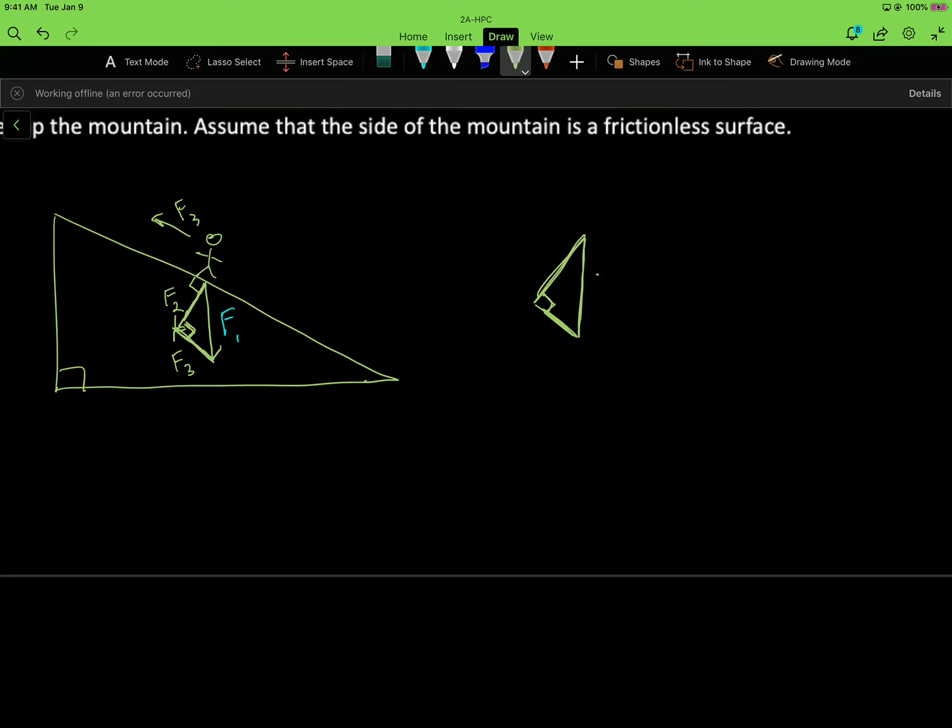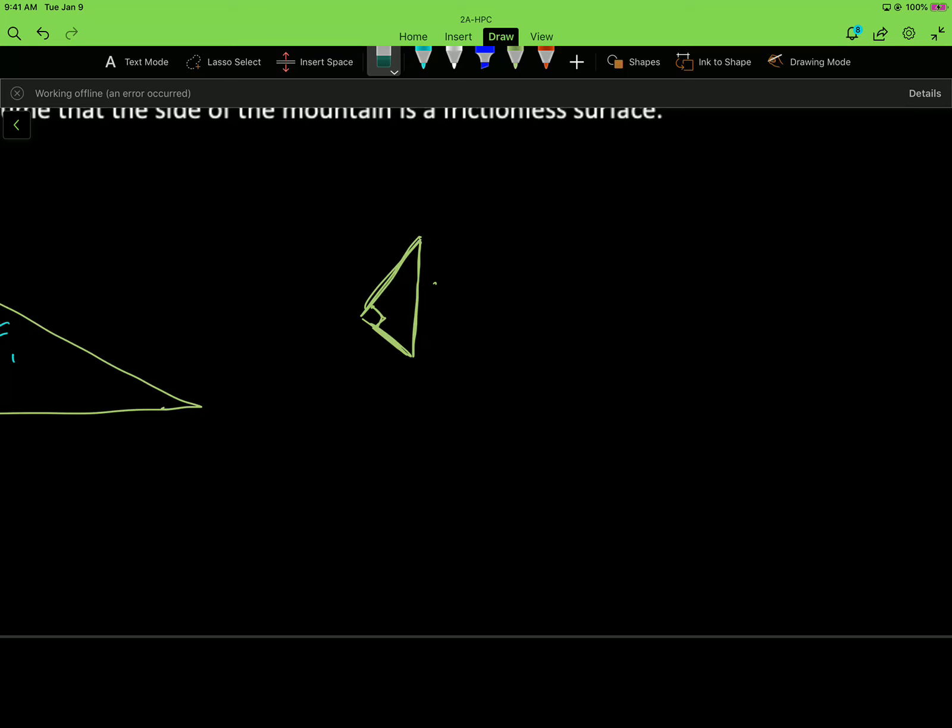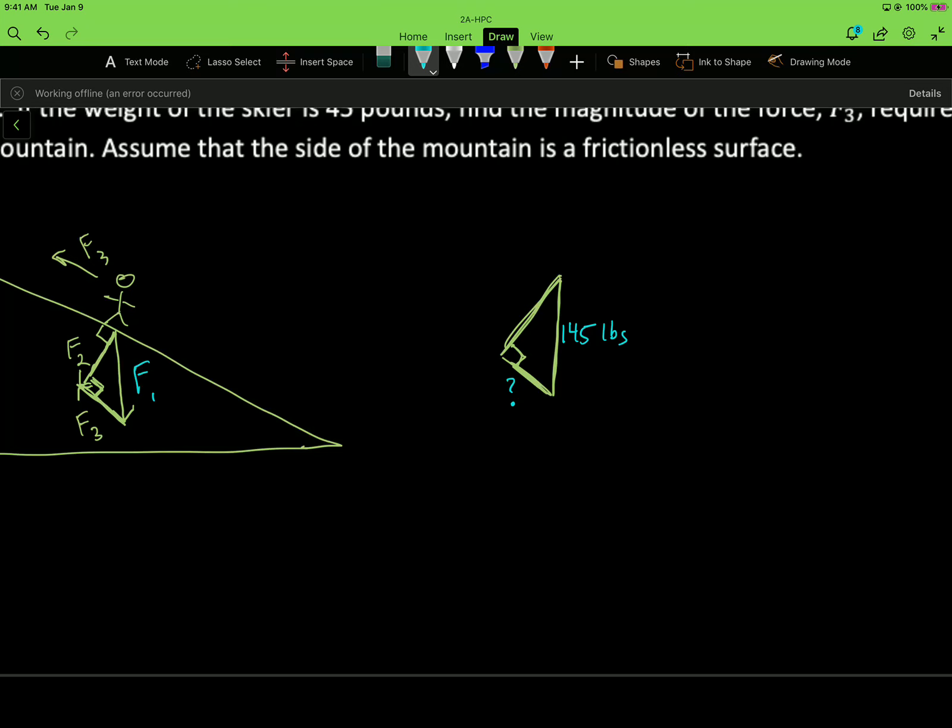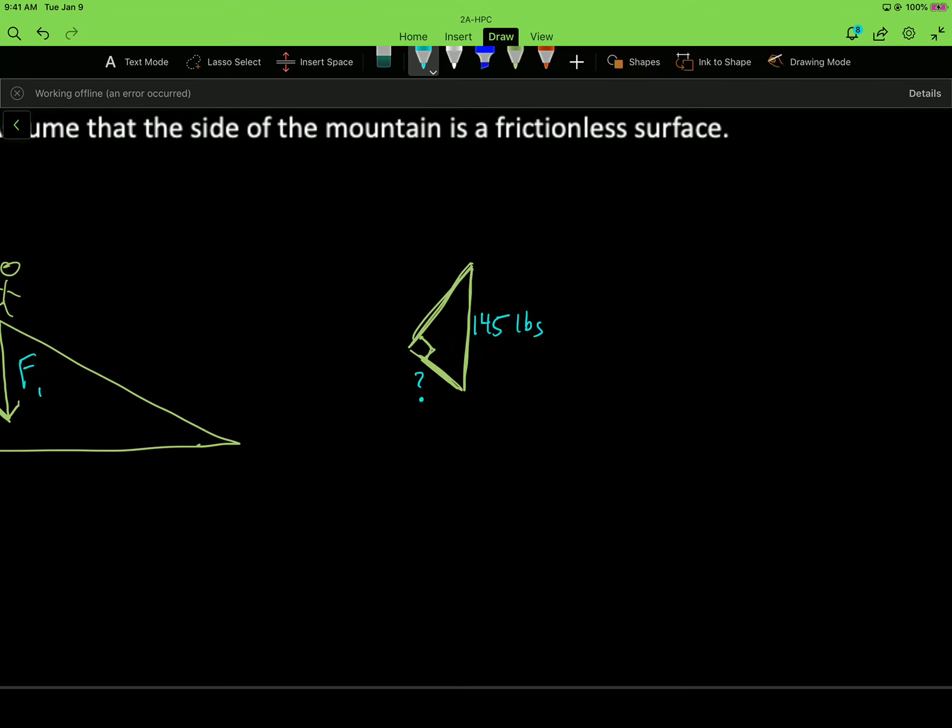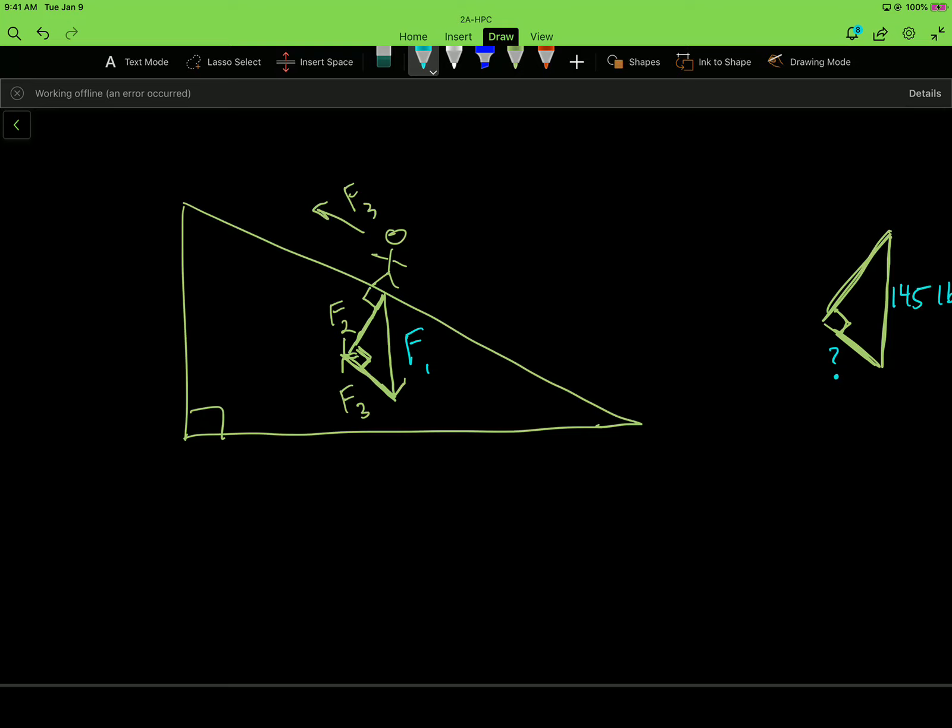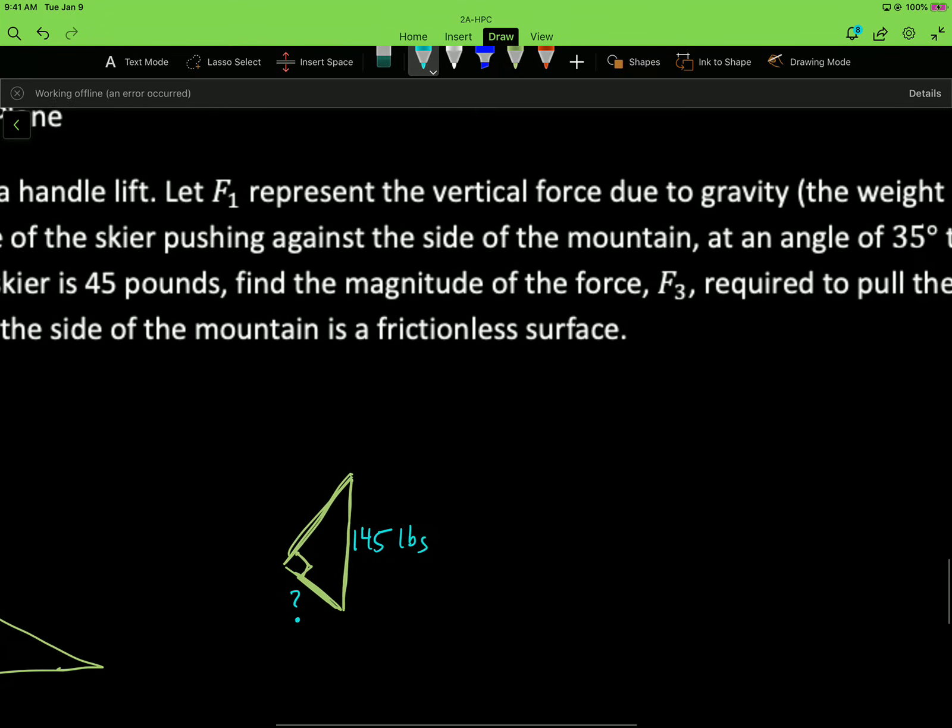So that force 1, they tell us the skier's weight is, let me check, it's 145 pounds. So this guy is 145. We're looking for this missing. That would be the magnitude of the force that's going parallel with the slope. That would be what's needed to pull him up the hill. So we can do this with trigonometry, but we need one of these angles. So if I come back to this picture, it says that the incline is 35 degrees.